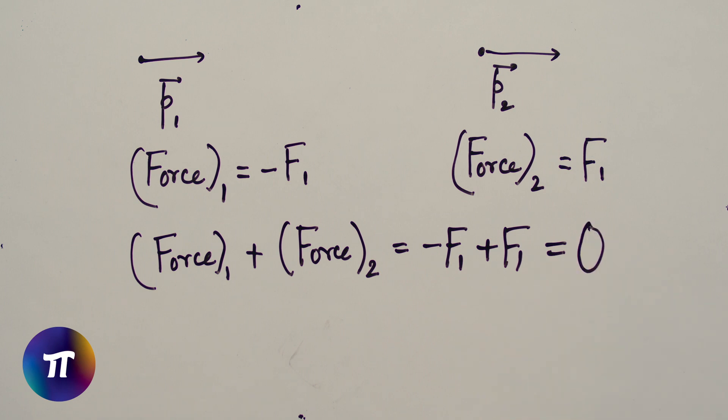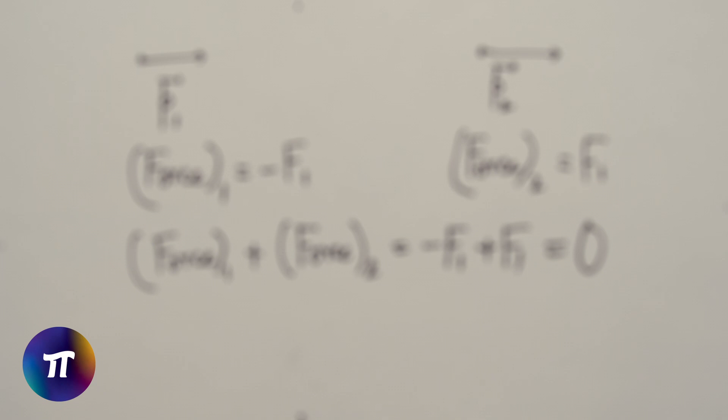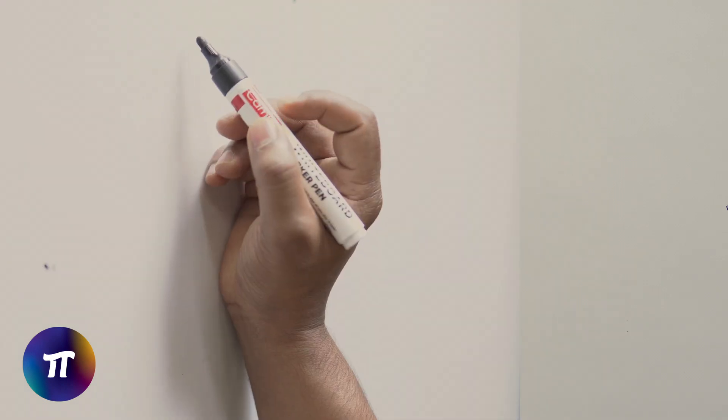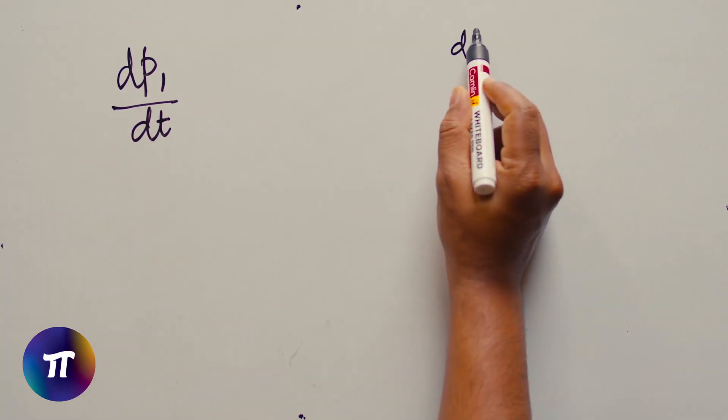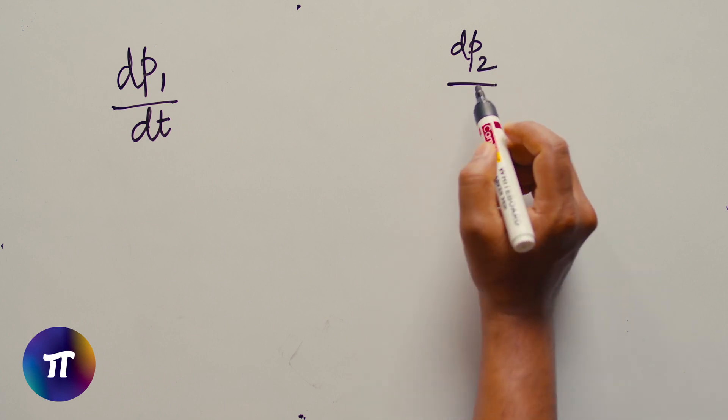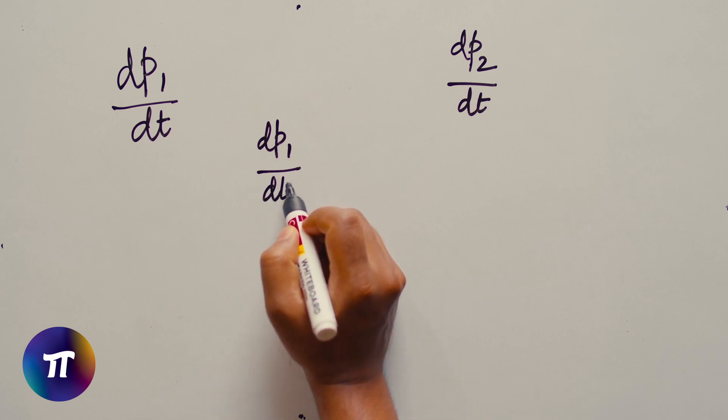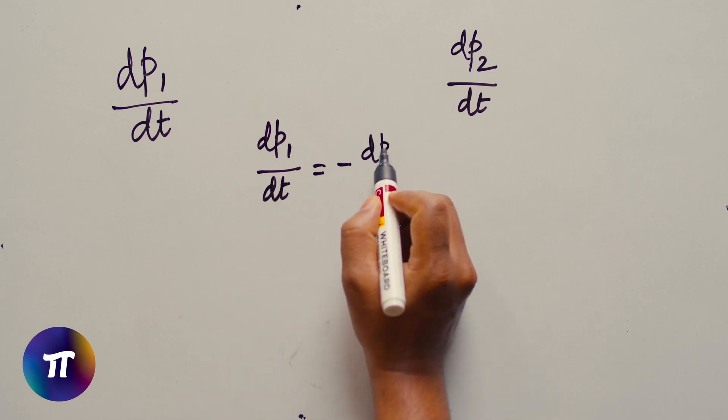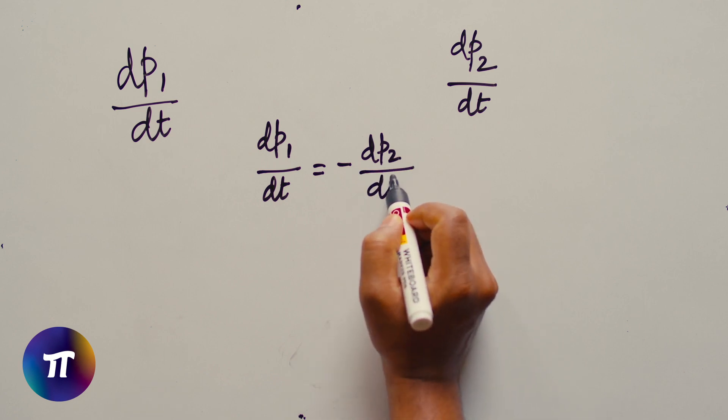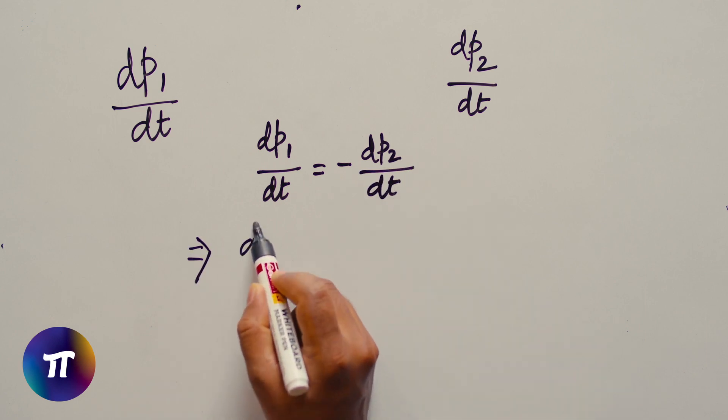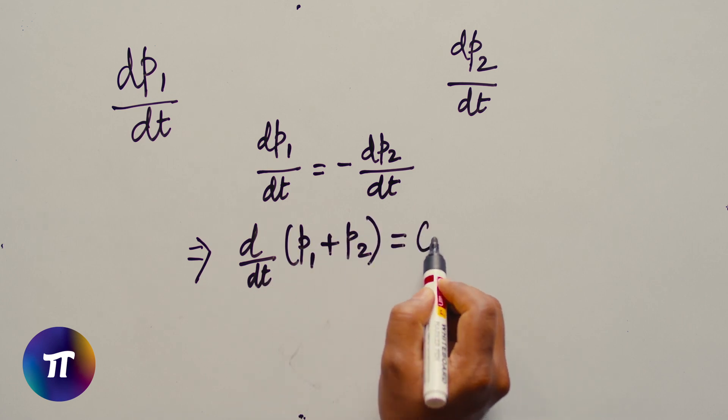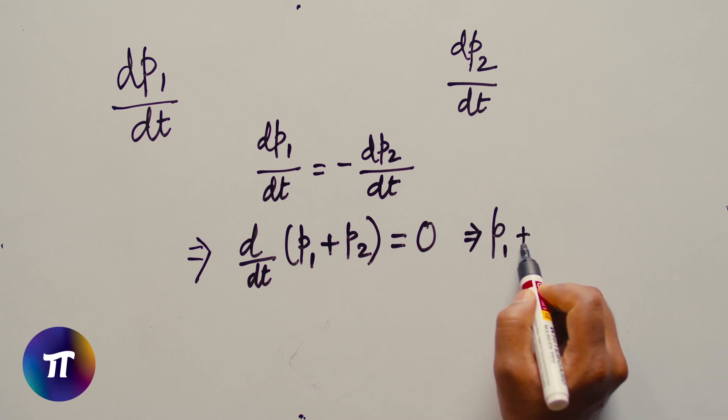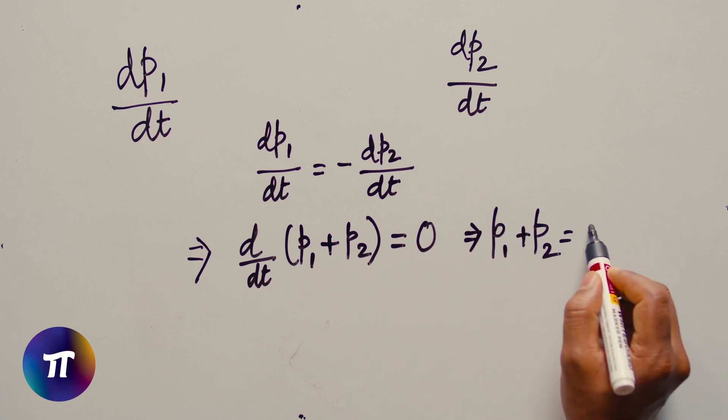We can also use calculus to reach the same conclusion. Force on the first particle is dp1 by dt and the force on the second particle is dp2 by dt. As per the second law dp1 by dt equals minus dp2 by dt, which implies d dt of p1 plus p2 equals 0. Which implies p1 plus p2 is constant.